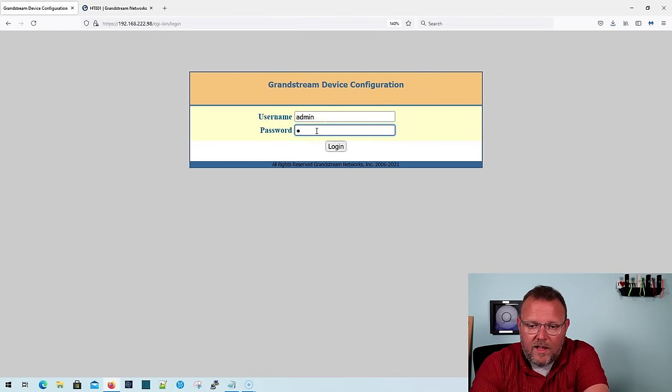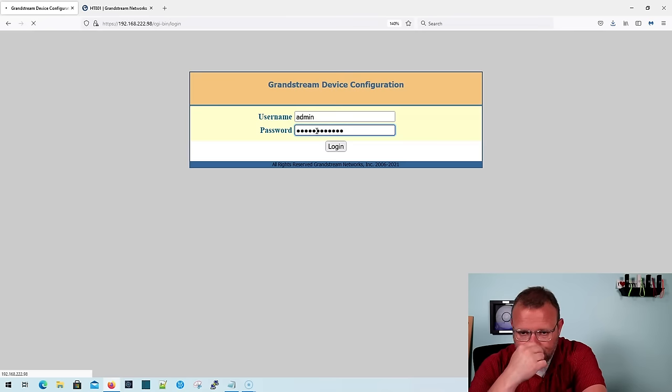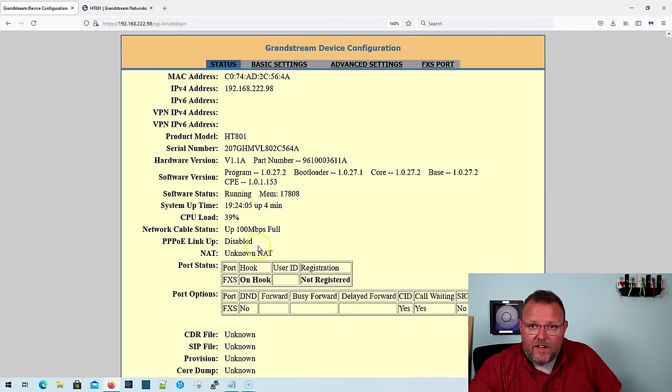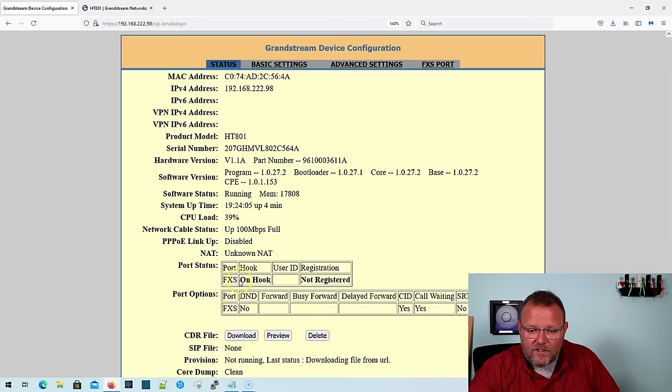So default username and password is admin, admin. So we'll get logged in here. And you can see here on the front page, it shows that our FXS port is on hook and it is not registered. So also the very first thing that you want to do once you log in is you want to see where your firmware version is at. And if you're not on the newest firmware, take the time to go out to the Grandstream website, firmware.grandstream.com, download the firmware and get your ATA updated. There are some security vulnerabilities in some of the versions of softwares. Just make sure you're up to date with the firmware.